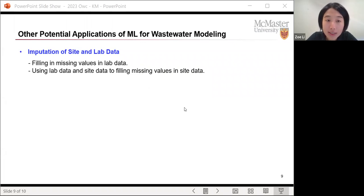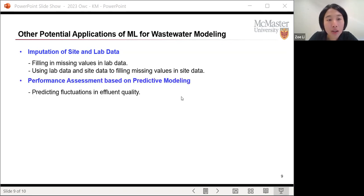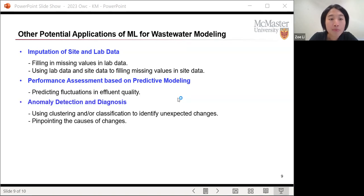For example, sometimes we get site data and lab data from wastewater or water treatment plants. Machine learning can help us fill in the missing values in our lab data or even site data. We can use machine learning to do performance assessment because, of course, you can predict the effluent quality. When you can predict the effluent quality, you can use that for performance assessment.